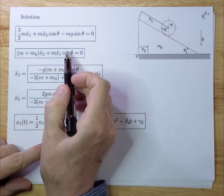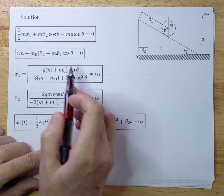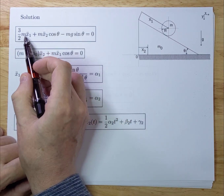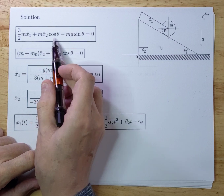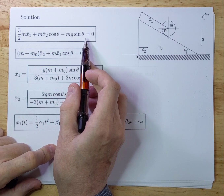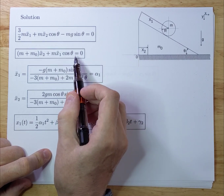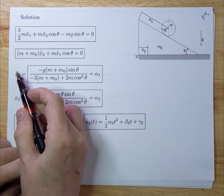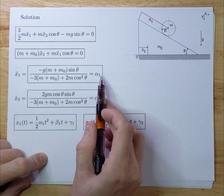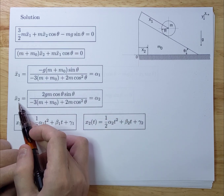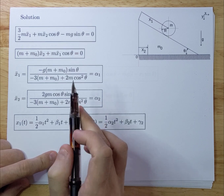Writing the equations out again: these are fairly simple — two equations with two unknowns, x1 double dot and x2 double dot. There are no dependencies on x1dot or x2dot, so you can easily eliminate them using standard algebraic techniques. The result is that x1 double dot — the acceleration of the disk — equals alpha1, and x2 double dot equals alpha2.